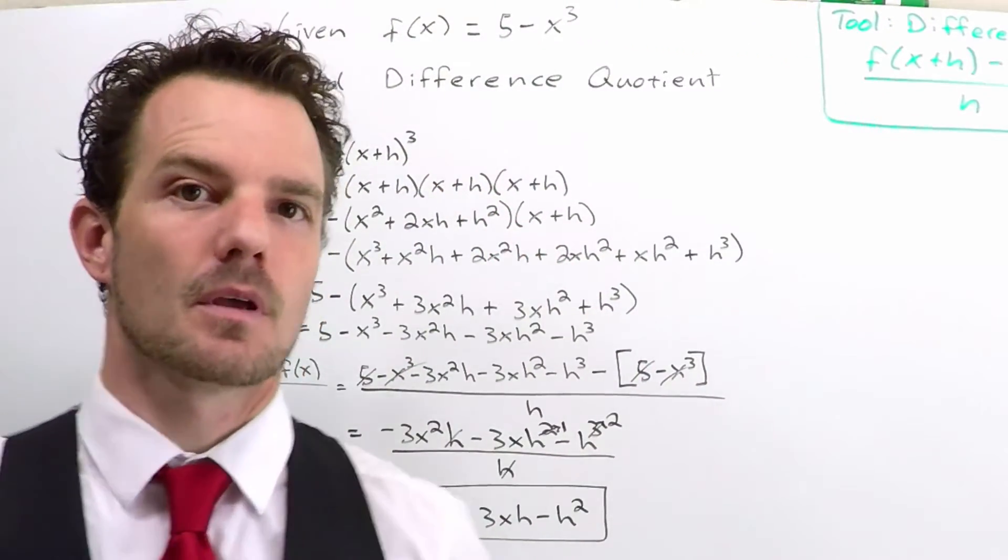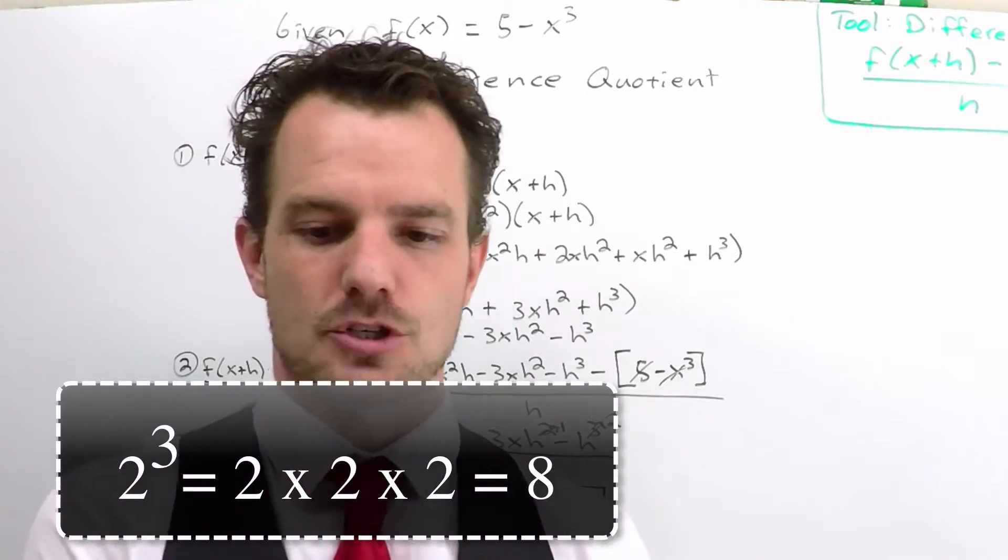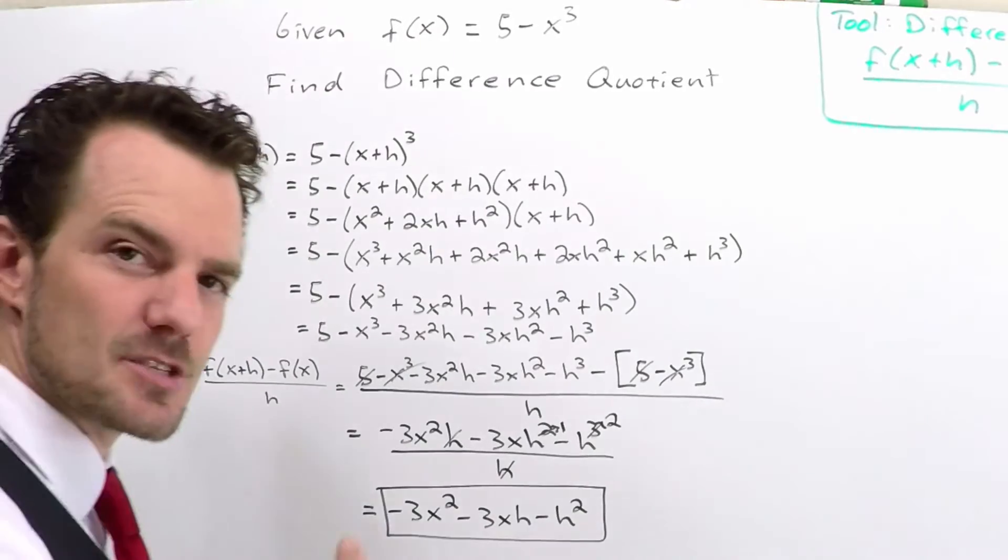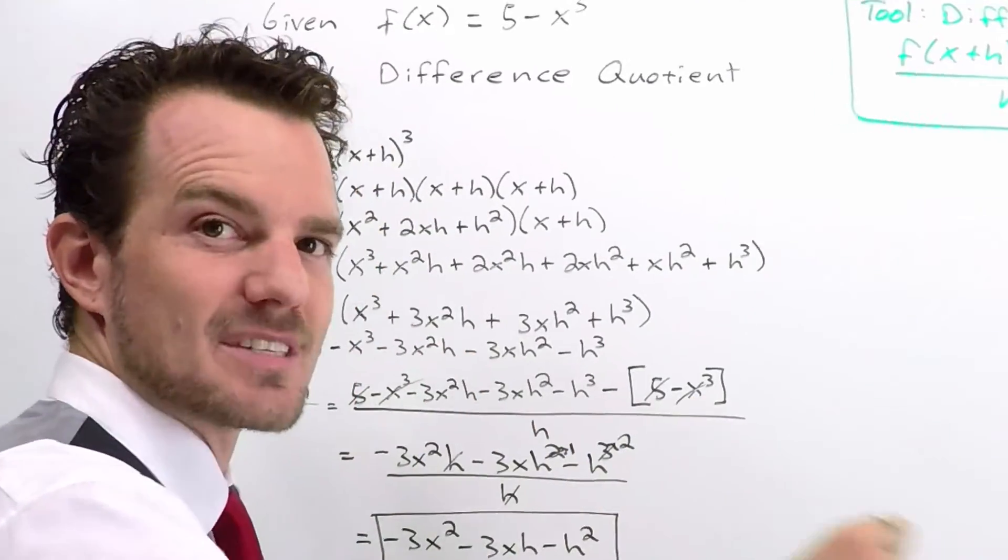Cubing means this. Two cubed, for example, is eight. Why? It's two times two times two. So cubing means multiply the thing you've got a total of three times, times itself.